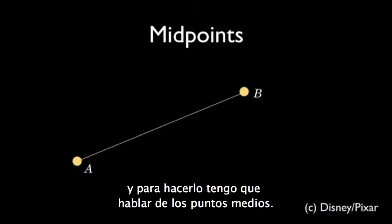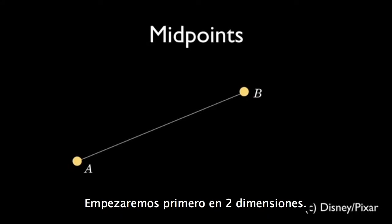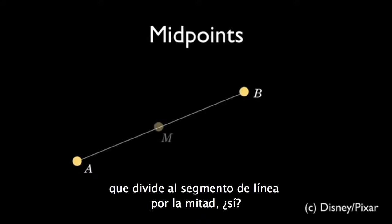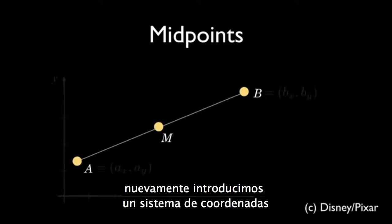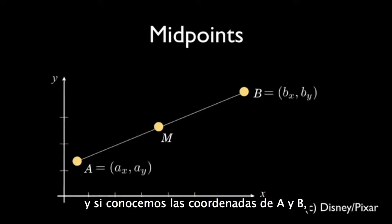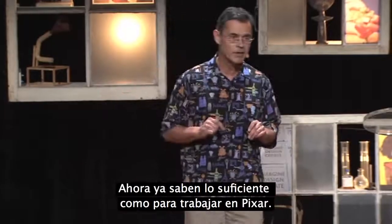I'd like to tell you how we do that, and to do that I need to tell you about midpoints. Here are a couple of points, A and B, and the line segment between them — starting out in two dimensions. The midpoint M is the point that splits that line segment in the middle. To make equations and numbers, we introduce a coordinate system. If we know the coordinates of A and B, we can easily compute the coordinates of M just by averaging. You now know enough to work at Pixar.